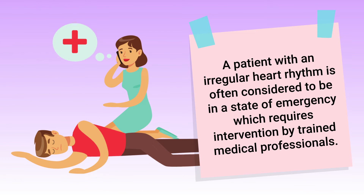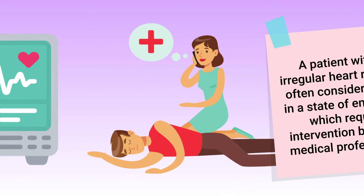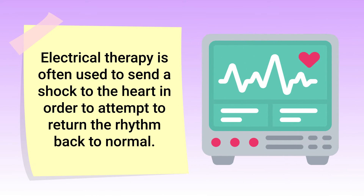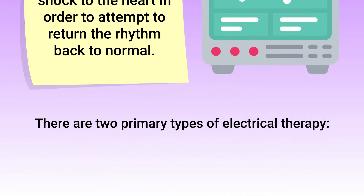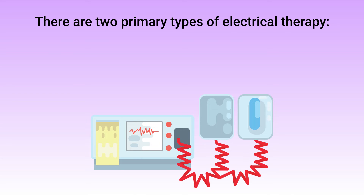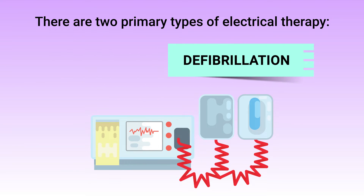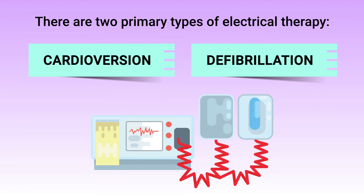A patient with an irregular heart rhythm is often considered to be in a state of emergency, which requires intervention by trained medical professionals. Electrical therapy is often used to send a shock to the heart in order to attempt to return the rhythm back to normal. There are two primary types of electrical therapy: cardioversion and defibrillation.